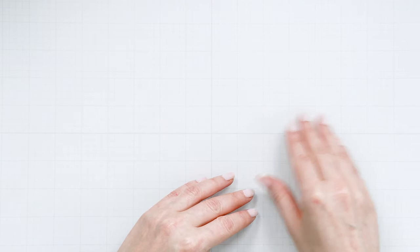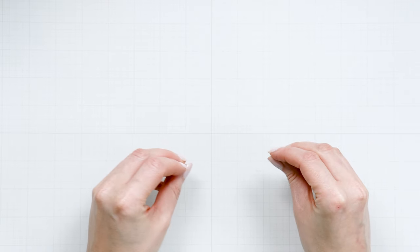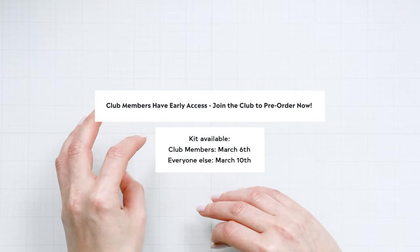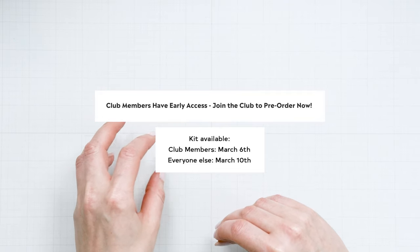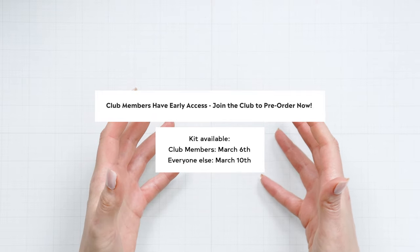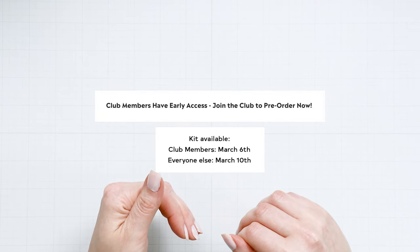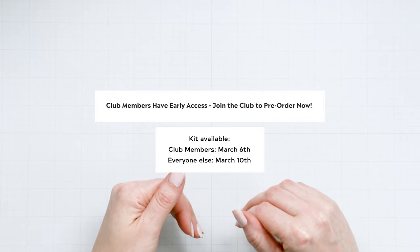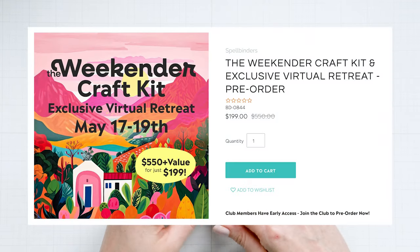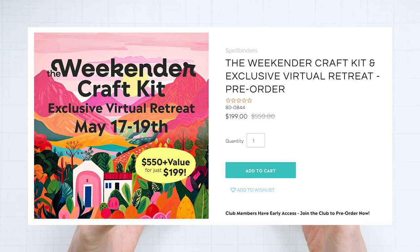So I hope to see you there. I have a link to the kit in my video description below. Right now, the kit is available to club members only. So if you are a Spellbinders club member, you have first dibs on the kit. So it went live to club members on March 6th. And then it's going to be available to everyone else on March 10th. The kit is $199, but on the website, it says that the full retail value of the Weekender Craft Kit and Virtual Retreat is over $550.